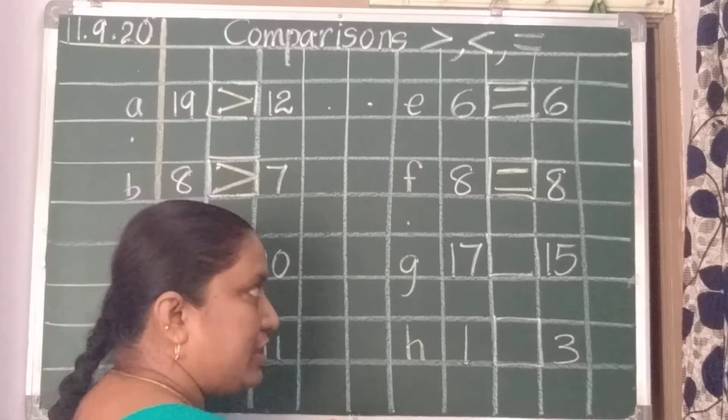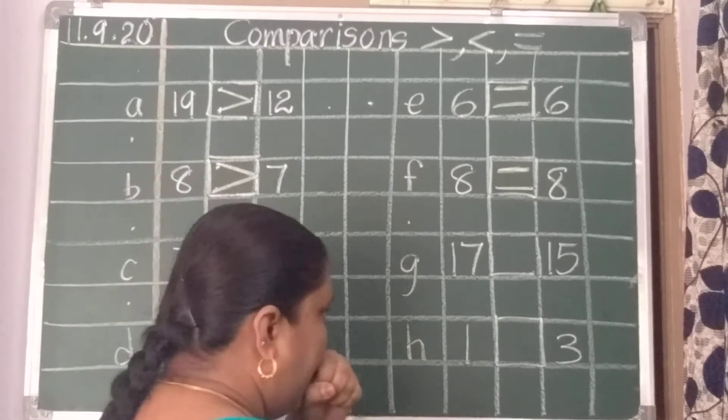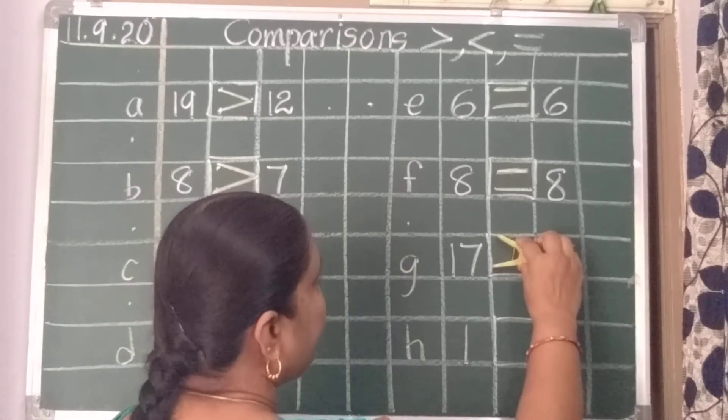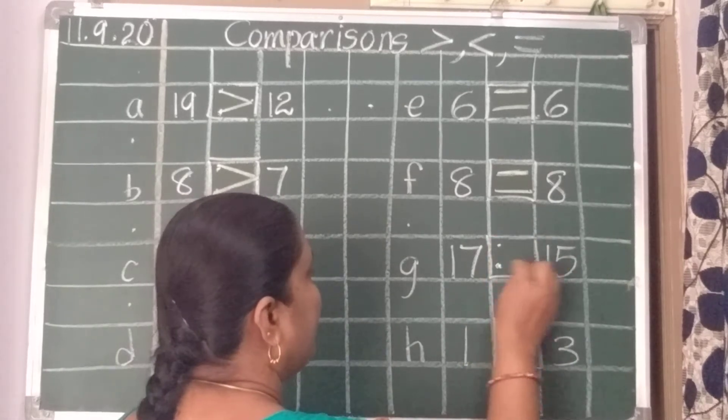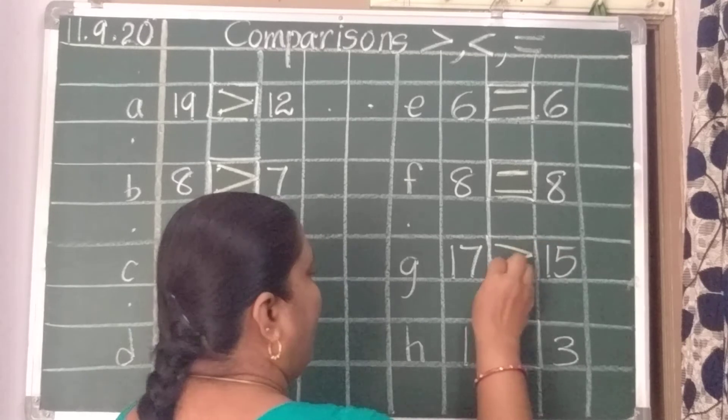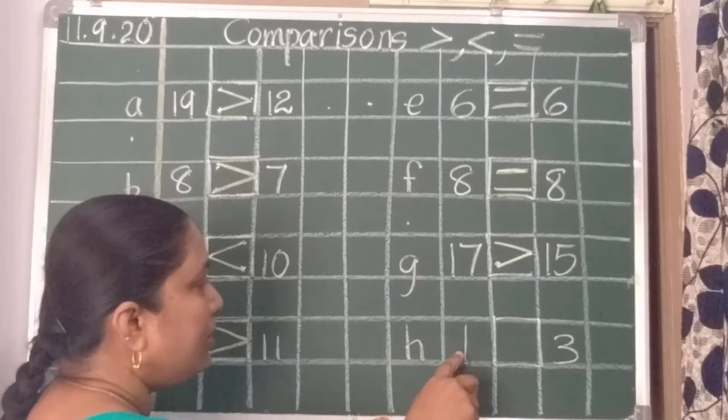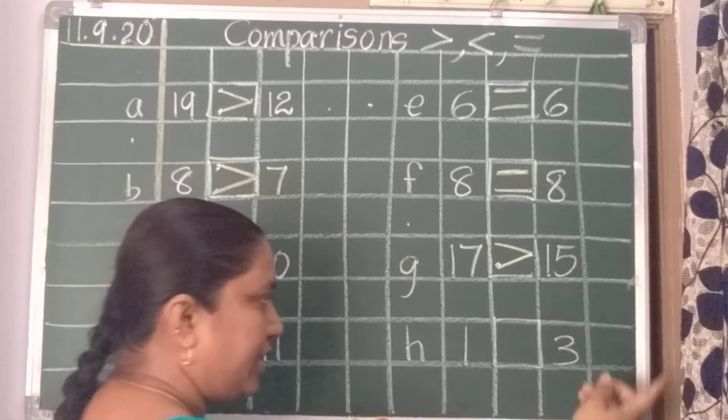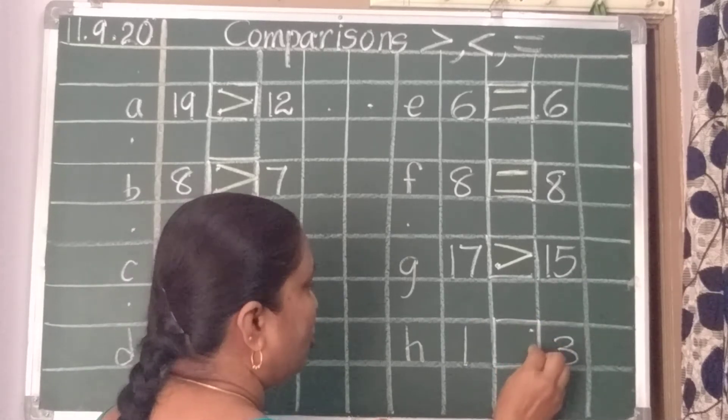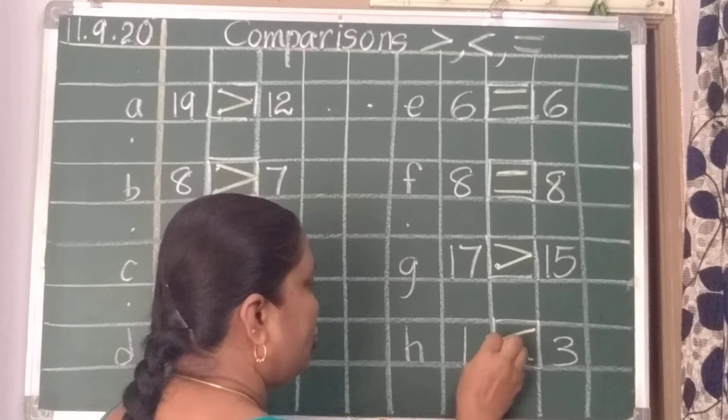17, 15. Which is the biggest number? 17 is the biggest number. So, this side the crocodile mouth will be open. Next, 1 and 3. Which is the biggest number? 3 is the biggest number. So, two dots here and one dot here. Now, join the dots.